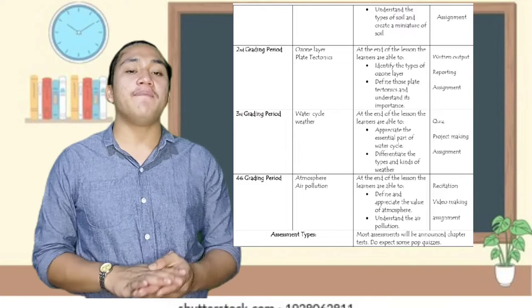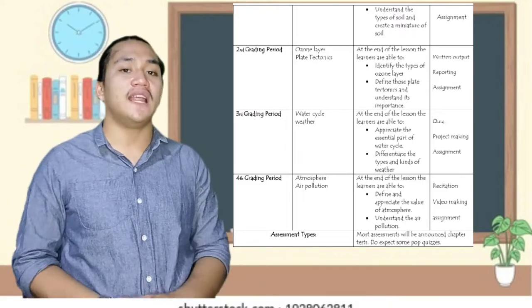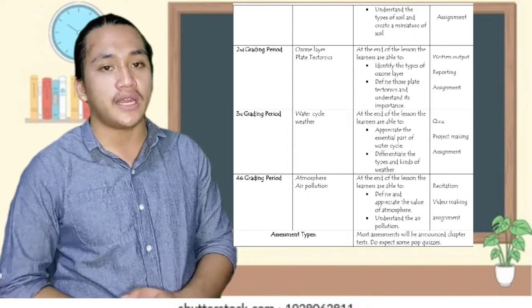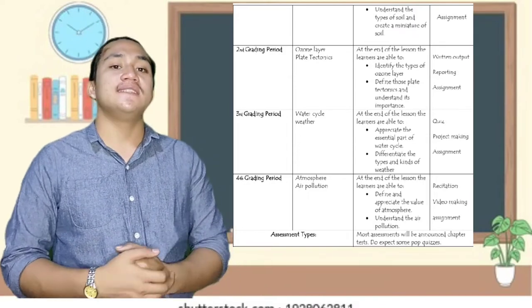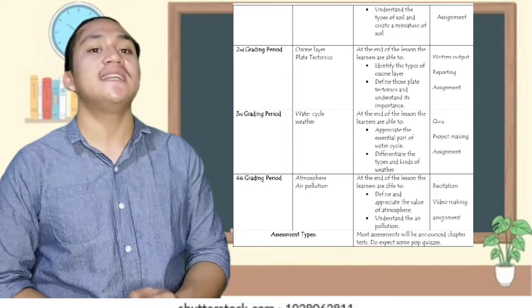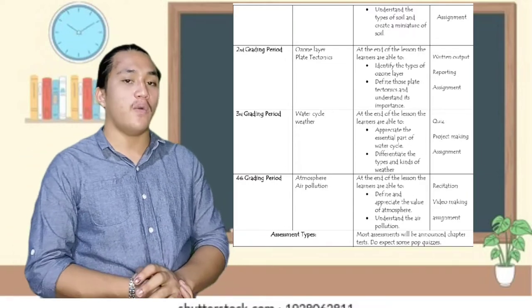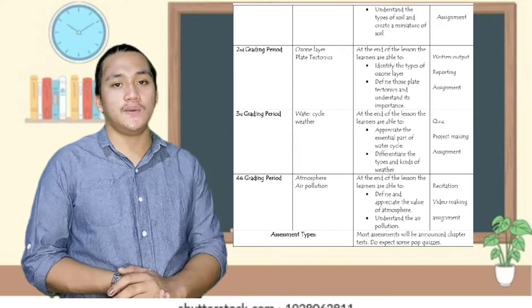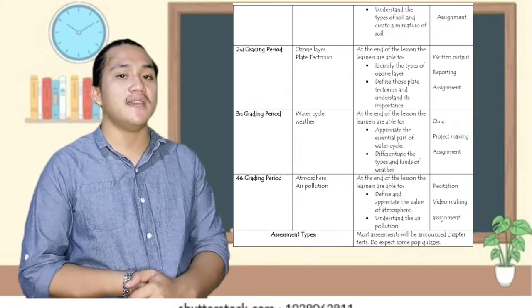For the third grading period, with the content of water cycle and weather. The topic learning outcome: at the end of the lesson, the learners are able to appreciate the essential part of water cycle and differentiate the types and kinds of weather. The assessments we're going to use are quizzes, project making, and assignment.